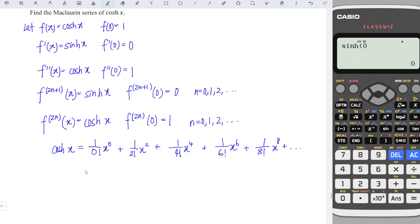So the Maclaurin series of hyperbolic cosine function is equal to 1 plus 1 over 2 factorial x squared plus 1 over 4 factorial, so 1 over 24 x to the power of 4.